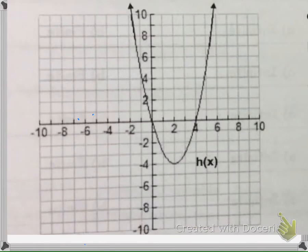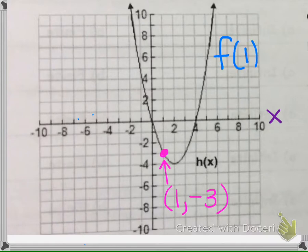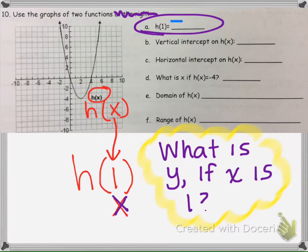We look at the graph and go to the x-axis, find x = 1 right here, and then go to the point on the graph with that x value. That point has an ordered pair of (1, -3). So when we're asked to find h(1), it means when x is 1, what is the output? The answer is negative 3.